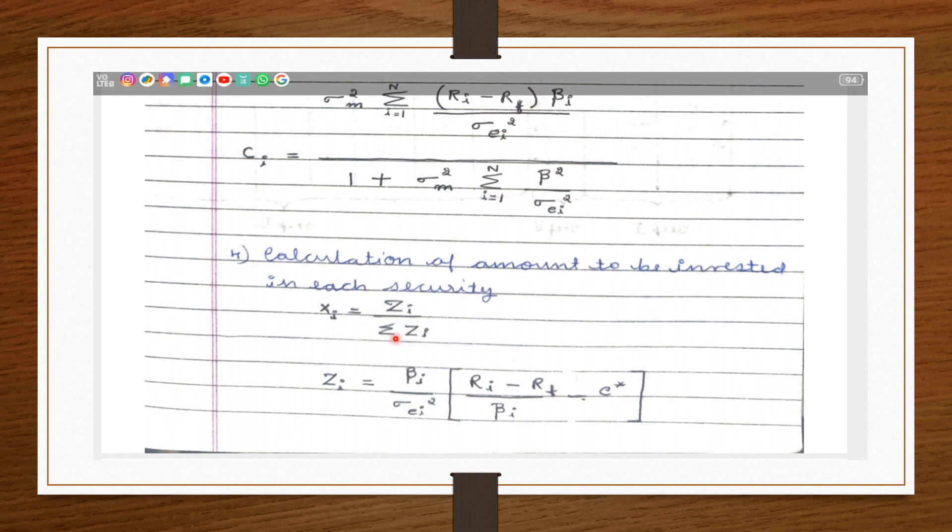This can be taken with the help of this formula. That is, for constructing the optimal portfolio, Xi is equal to Zi upon summation Zi. What is Xi?